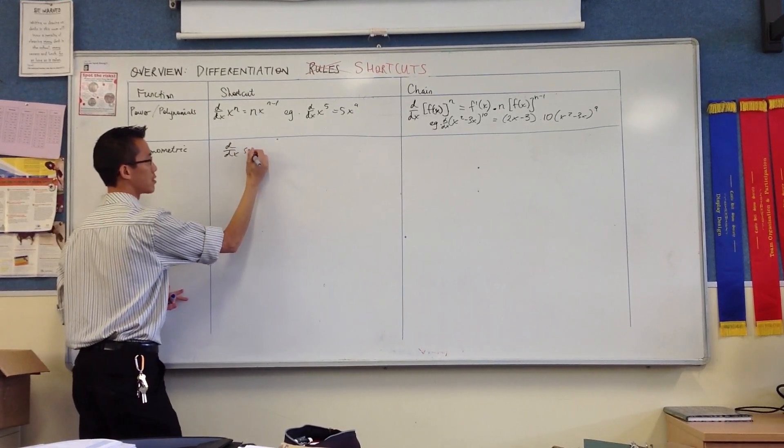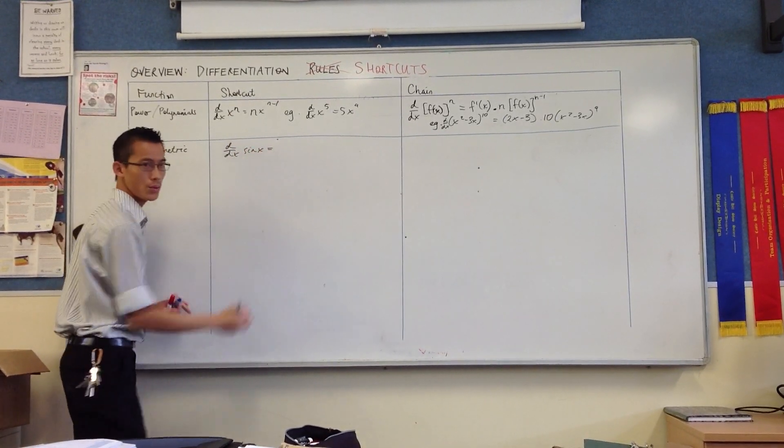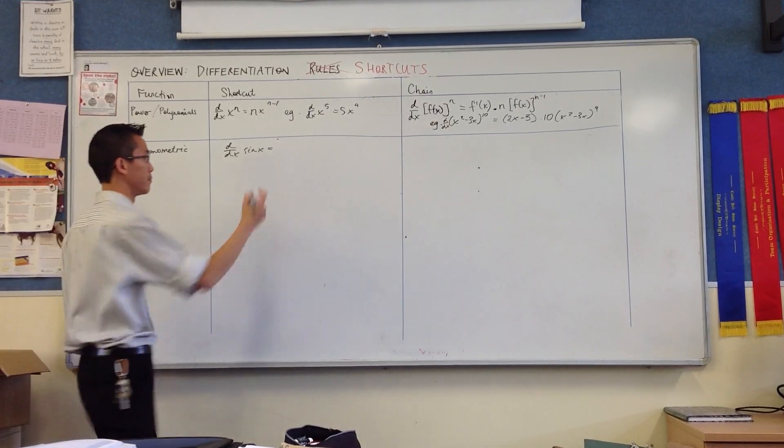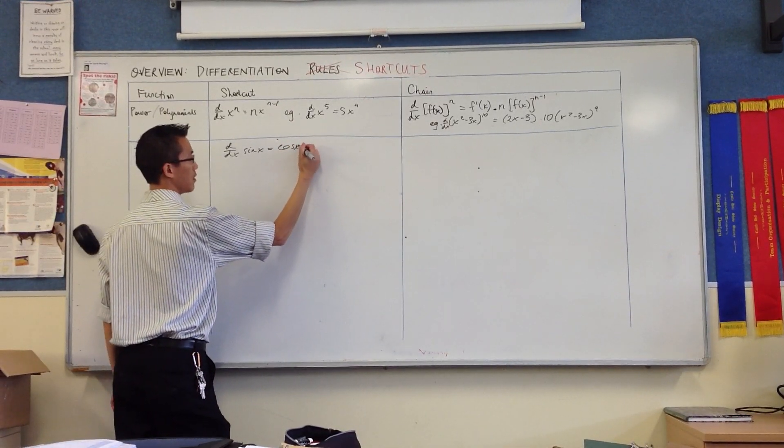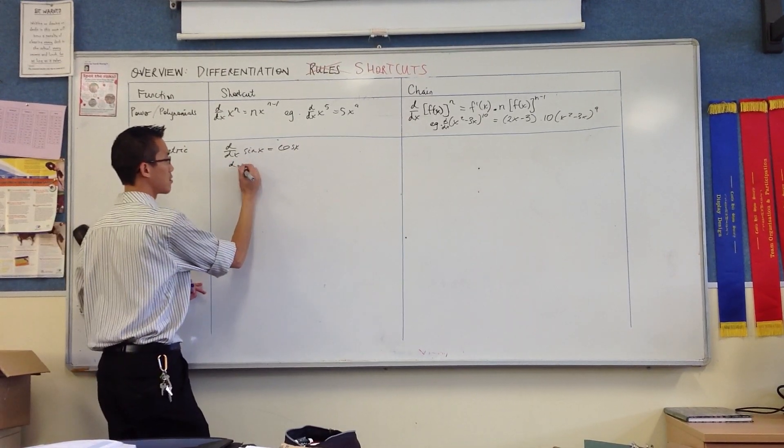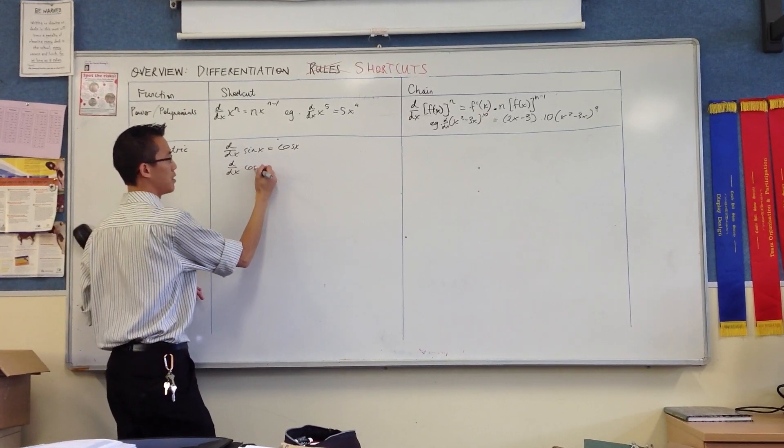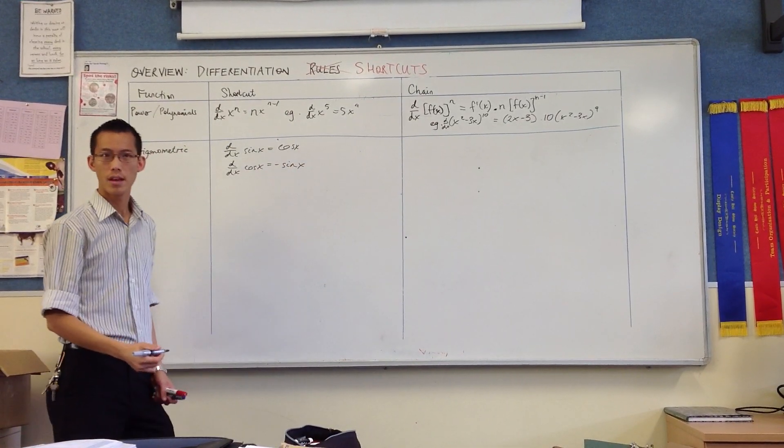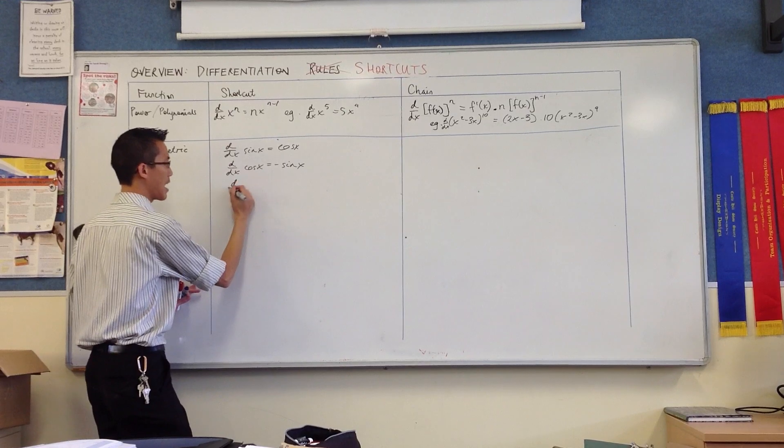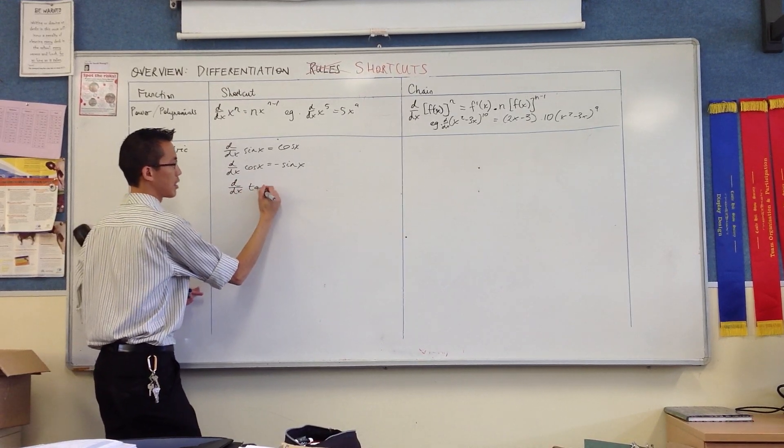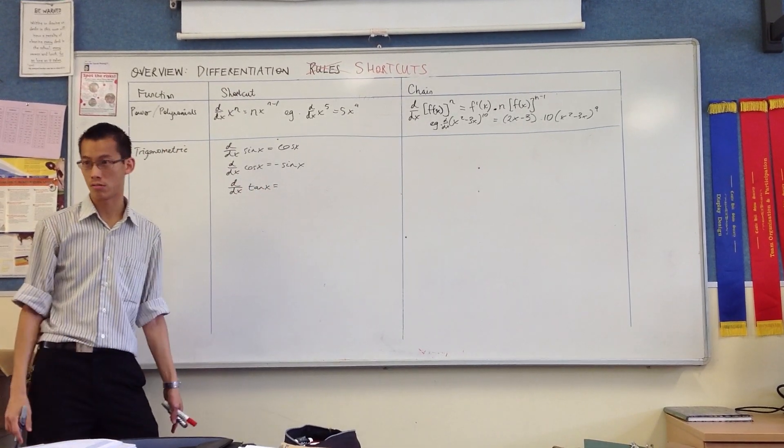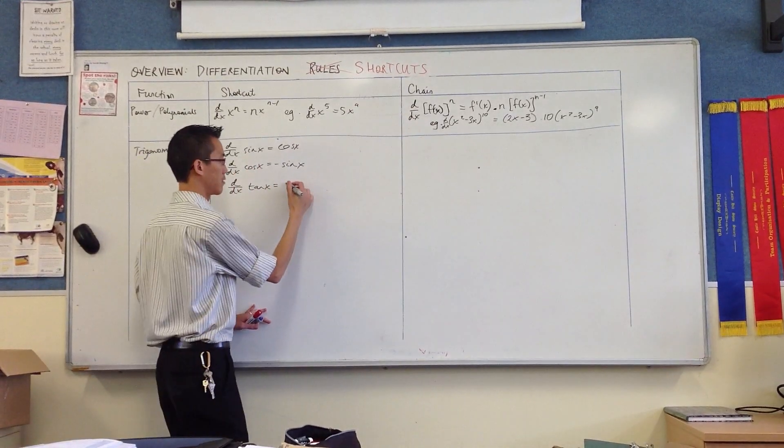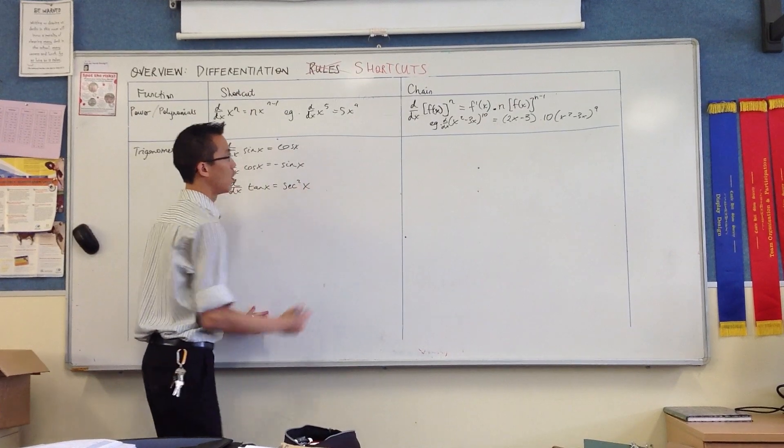The derivative of sine x is the very first one we did from first principles, and the result we got was cosine. Differentiate cos and you get a very similar result but not quite, it's negative sine. And then if you differentiate tan, this is really just sine over cos, so we used the quotient rule and we ended up with sec squared.